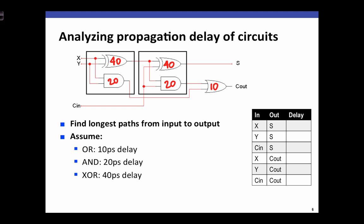In general, when we consider propagation delay problems, we're concerned about finding the longest path through a circuit — maybe from any input to any output. We compute for every particular input the longest path from it to the output. For x to S: if x changes at time 0, its output through the first XOR gate changes at time 40, and S changes 40 time units after that, giving a total path delay of 80 picoseconds.